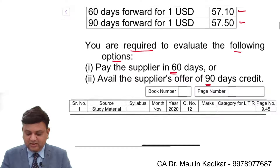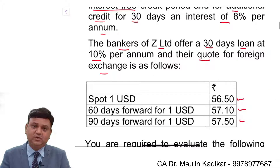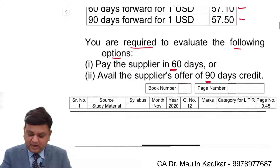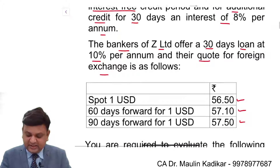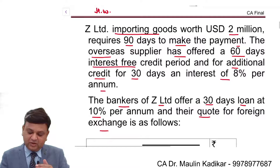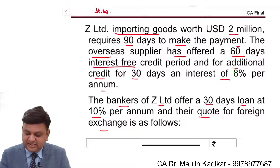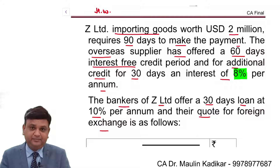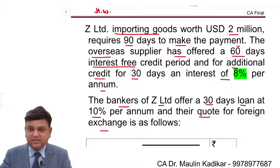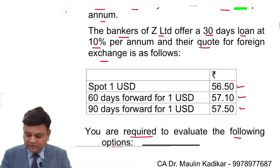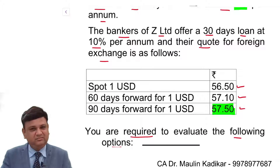Now, just one thing I want to tell you: if you make payment after 90 days, then you are required to make the payment of interest to the supplier. In that case, the rate of interest is 8%. So the amount will be $2 million plus interest, and you will enter into the forward contract at the rate of 57.50.